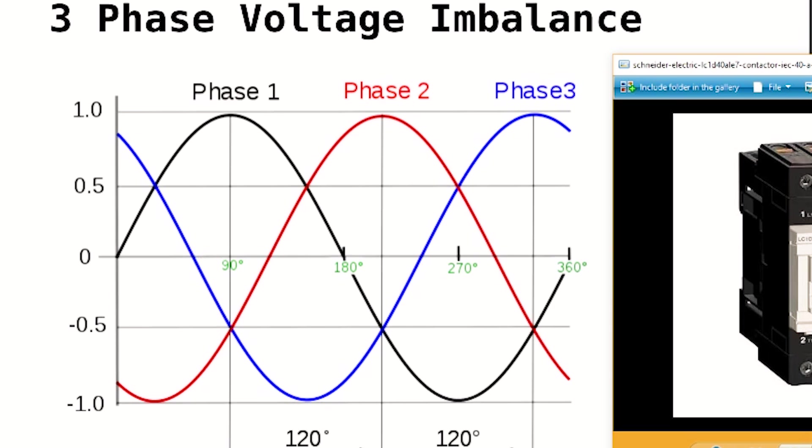One of the more common causes would be the actual controls inside the unit itself, so the contactor or starter that's feeding a particular device. You can have three-phase voltage imbalance coming into a unit, say a package unit or something, or you can also have three-phase voltage imbalance coming out of a contactor or starter.